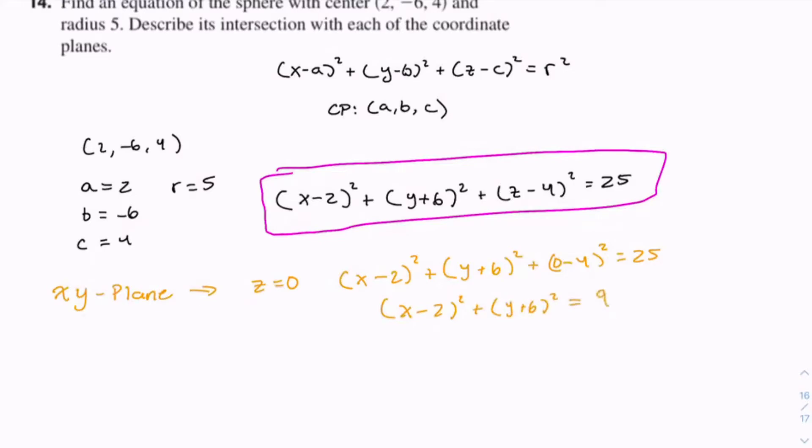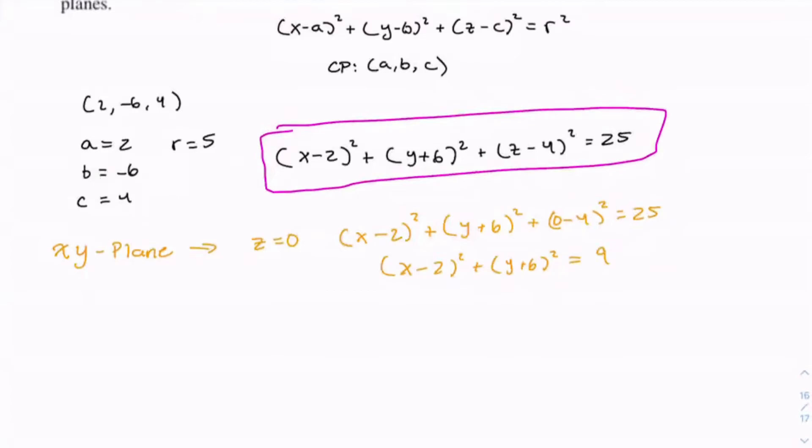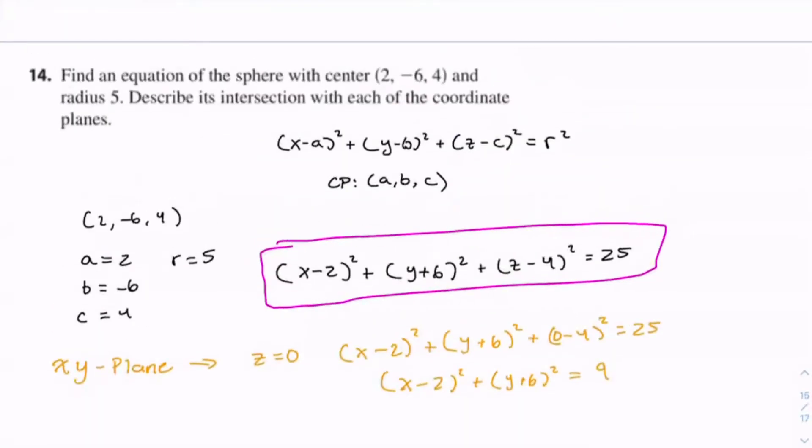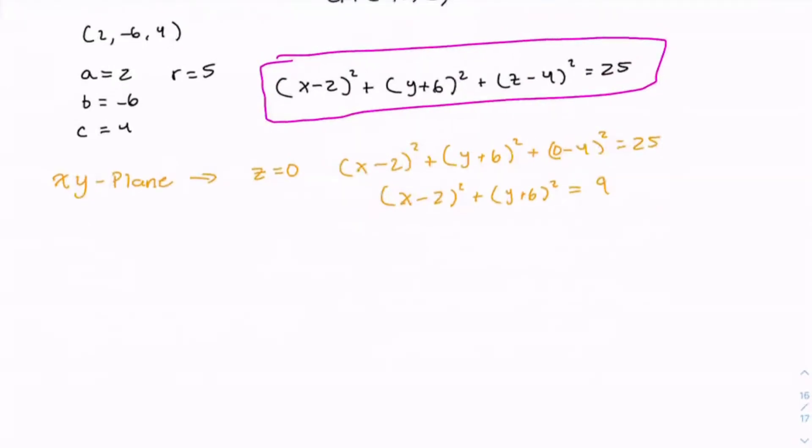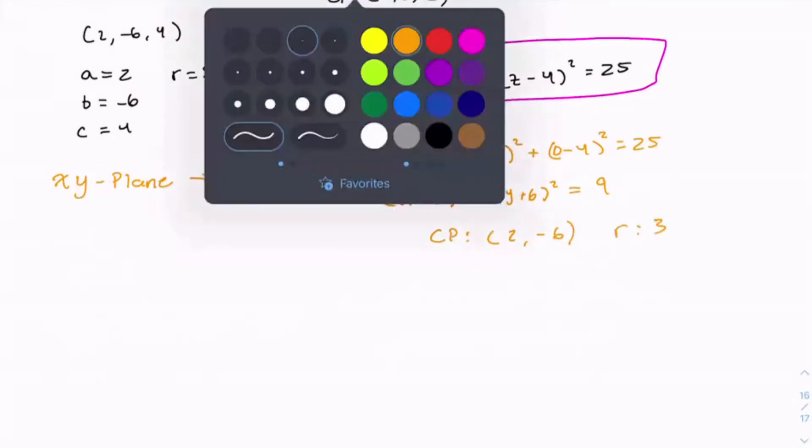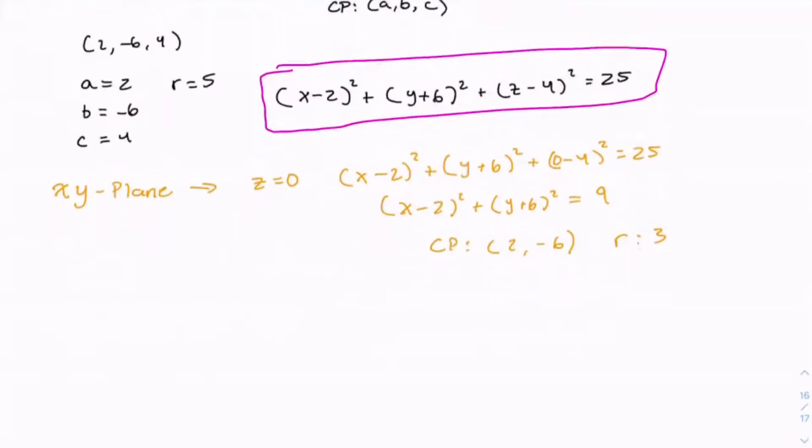(x - 2)² + (y + 6)² = 9. So the intersection with the xy-plane is a circle, a two-dimensional circle with center point (2, -6). Well, not radius 9. I mean radius 3.